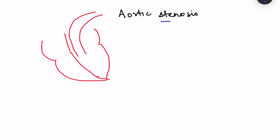Aortic stenosis is decreased opening of the aortic valve. The aortic valve opens at the beginning of systole when the ventricles pump blood — the right ventricle pumps into the pulmonary artery and the left ventricle pumps blood into the aorta. If there is narrowing of this aortic valve, the aperture will be smaller in size — the area will be smaller.